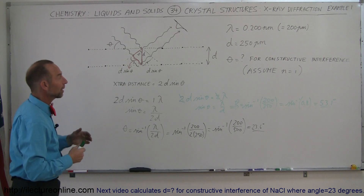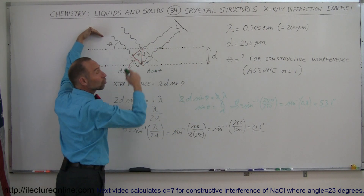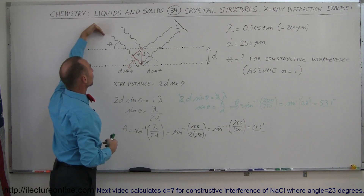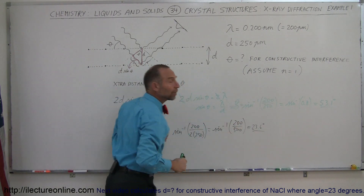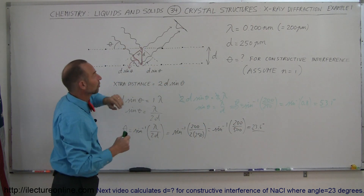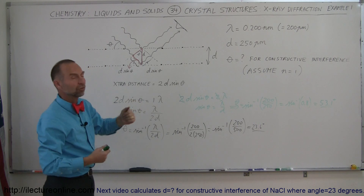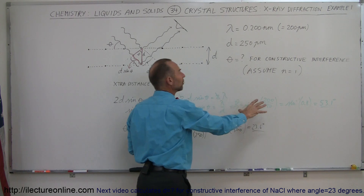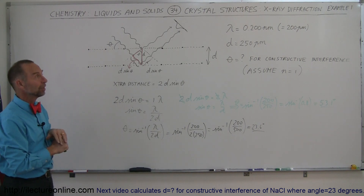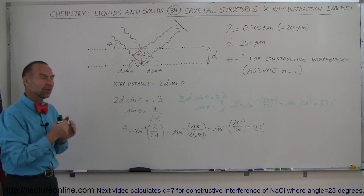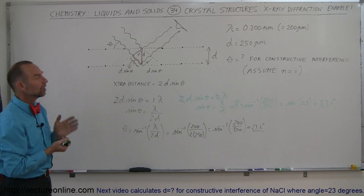So we can start sweeping the X-ray beam angle. When we reach 23.6 degrees, the detector will see a strong constructive interference signal. Then as we continue increasing the angle, the signal disappears, until we reach 53.1 degrees, where the interference pattern becomes strong again. By observing constructive and destructive interference at various angles — and knowing the X-ray wavelength is 200 picometers — we can determine the separation distance between layers in the crystal structure using X-ray diffraction techniques.